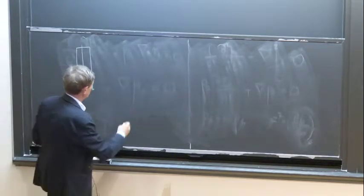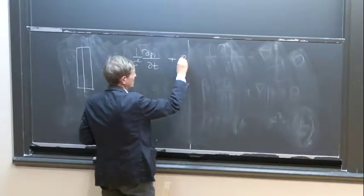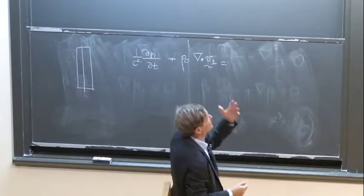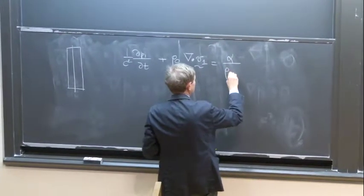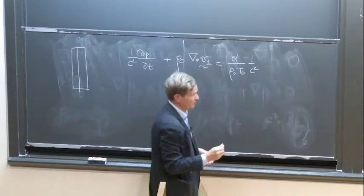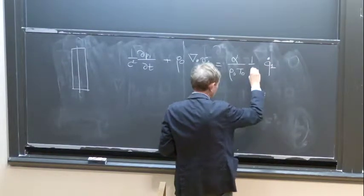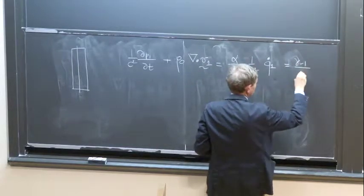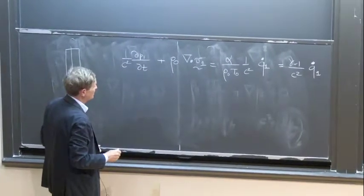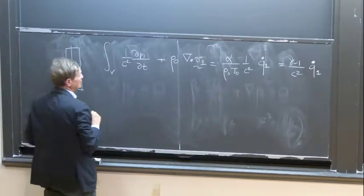The idea is to see if we can write a jump condition across the compact flame and relate the field on the two sides to the heat release rate fluctuations. We assume a compact flame and have a volume which surrounds this flame. We make it as a line because it's compact compared to the wavelengths. We know that (1/c²)(∂p1/∂t) + ρ0 ∇·v1 = (γ−1)/c² × Q̇1. We take the integral of that over this volume.